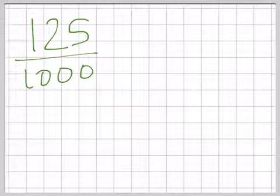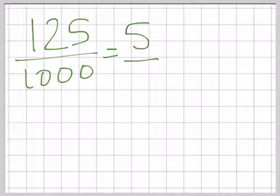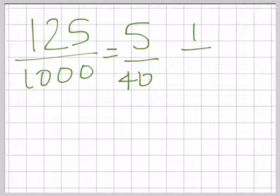To simplify, you can do it in little stages. If we divide by 5 first of all, or maybe 25 actually, we could divide by 25 and that would give us 5 over 40, and then if we divide by 5 again we would get 1 eighth.